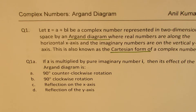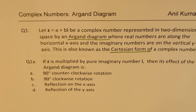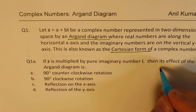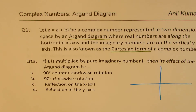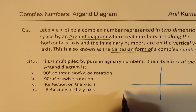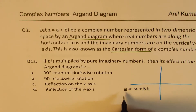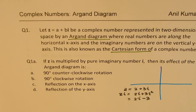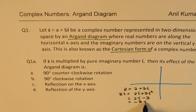Let's begin with the first question. If z is multiplied by pure imaginary number i, then its effect on the Argand diagram is what? Let's take a complex number and see how it changes. I will take a very simple number so that we can easily plot and see the effect. Let us say z equals 2 plus 3i. Now, if I multiply by i, then what happens? I get 2i plus 3 times i squared. Multiplying by i, we know i squared is negative, so what we get is 2i minus 3. So 2i minus 3 means we can write this as negative 3 plus 2i.